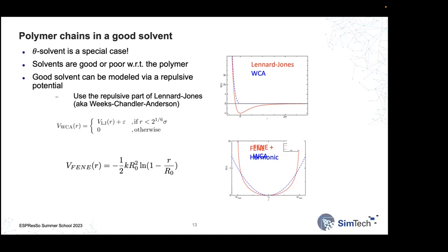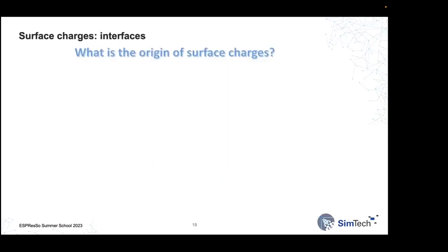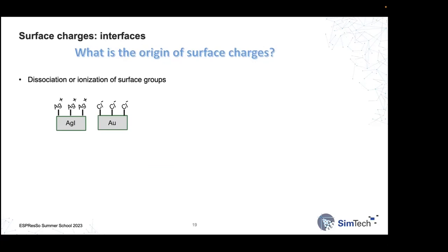You can tune solvent properties by playing with Lennard-Jones interactions. Now let me switch from polymer coarse graining to charged systems. The first question is: what is the origin of surface charges? There are two fundamental effects: first, dissociation or ionization of surface groups at an interface, which creates a corresponding surface charge — this is a chemical reaction.